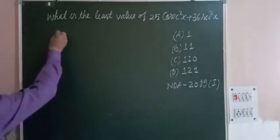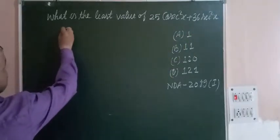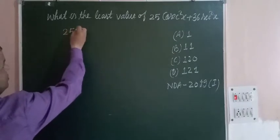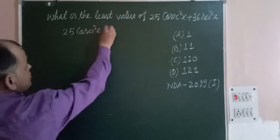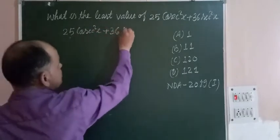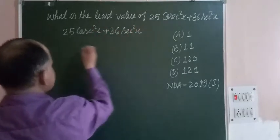Students, first we take the given expression, the vertical expression 25 cosec²x plus 36 sec²x and we write it.